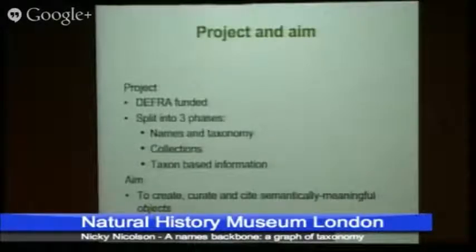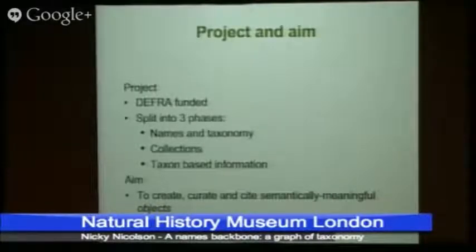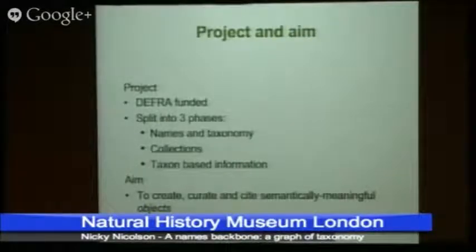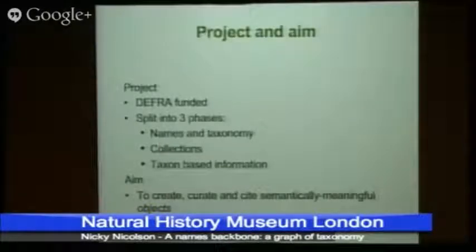We split the work into three phases. First, nomenclature and taxonomy — that's the area I work on and what I'm going to talk about today. When we've sorted out the names, we're going to switch focus to collections next year, though that doesn't mean we'll have done all the names by then. And when we've done those two, we're going to work on taxon-based information — the assertion that a species has a particular characteristic.